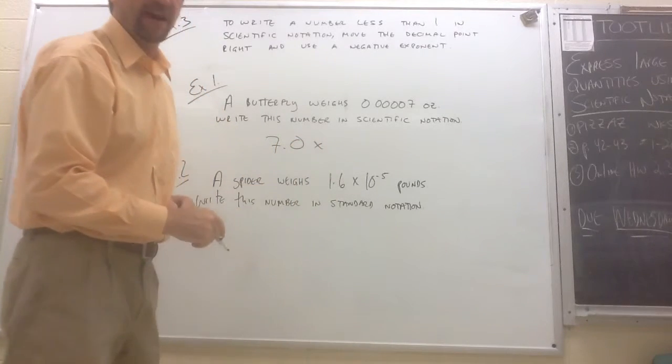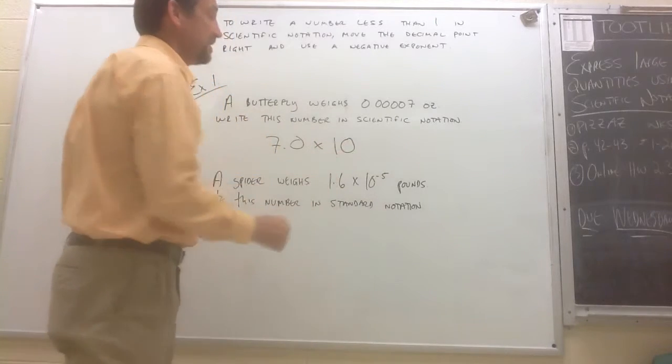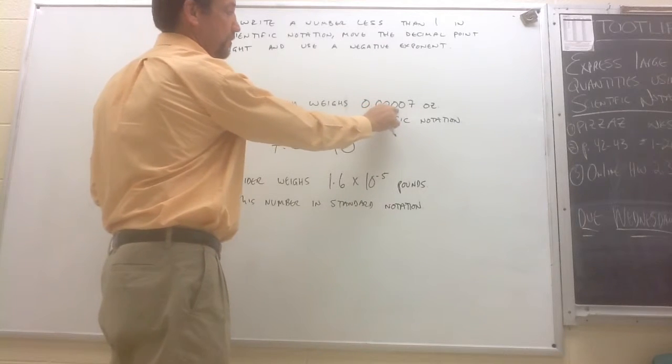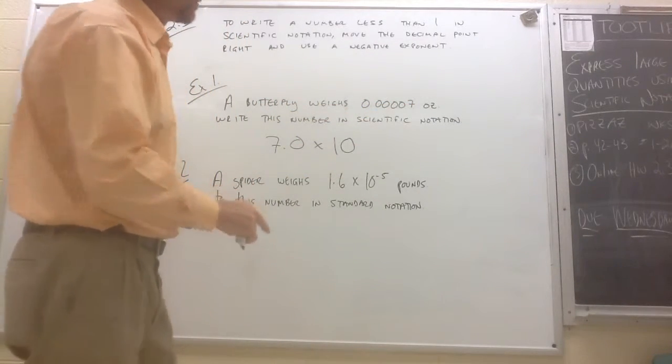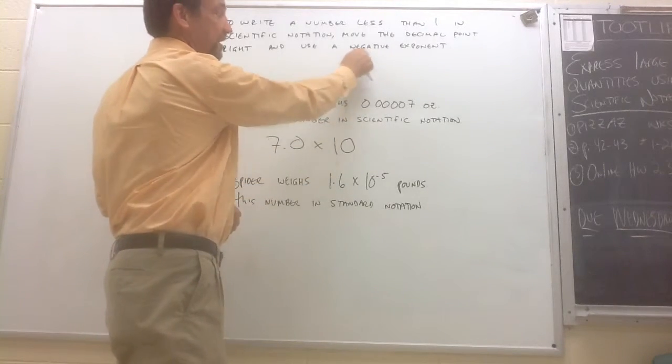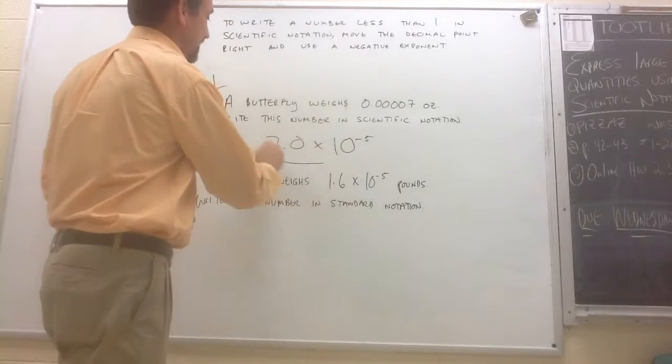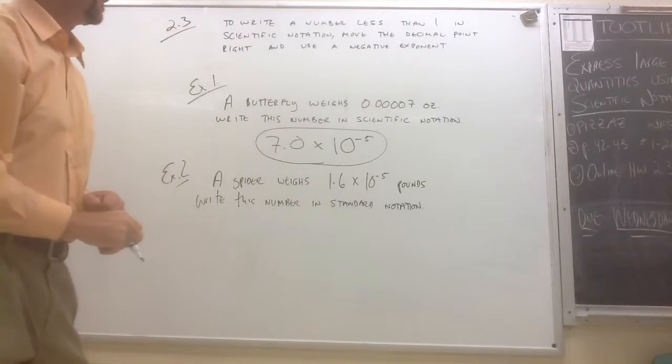And our second factor is always a power of ten. Times ten to the which power? Well, notice we moved our decimal one, two, three, four, five places to the right. So it's ten to the negative five. That is how you would write this number in scientific notation.